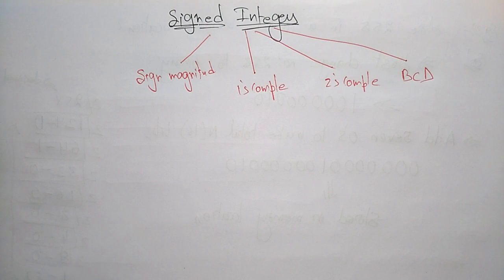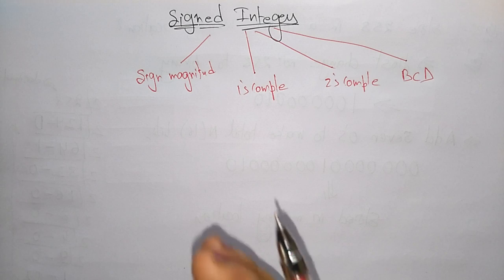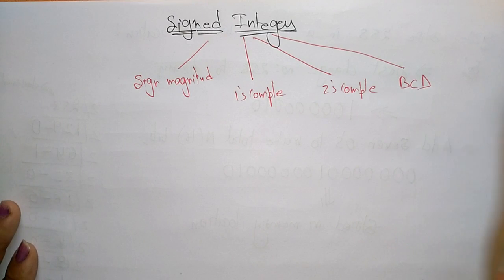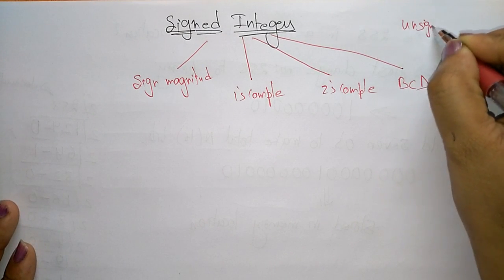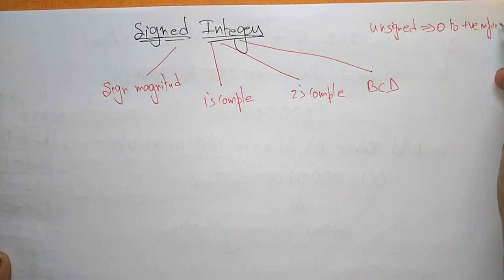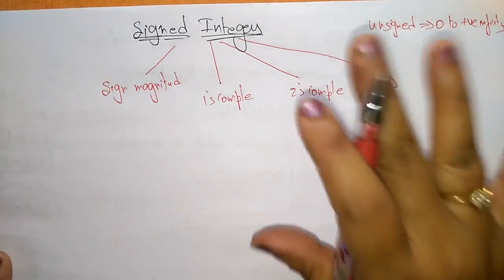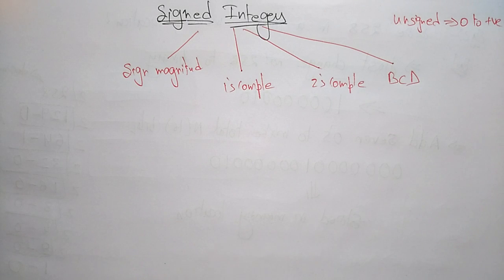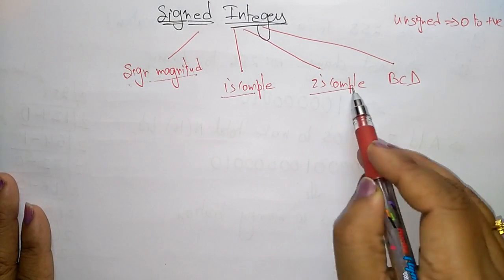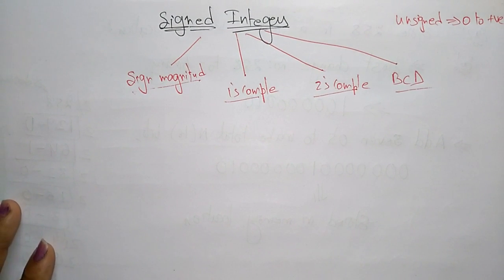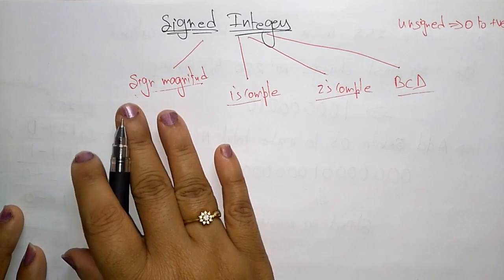Unsigned numbers follow only one method because they are only positive numbers. The unsigned range is between 0 to positive infinity. Signed integers also include negative numbers, so they can be represented using sign and magnitude, one's complement, two's complement, excess-N bias, and BCD binary coded decimal.